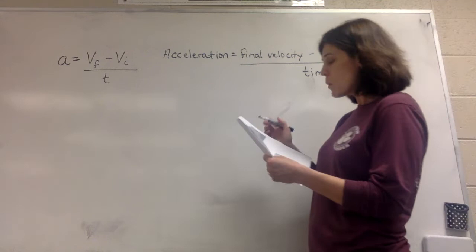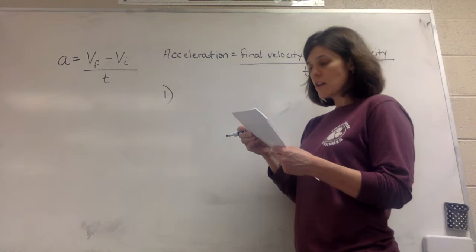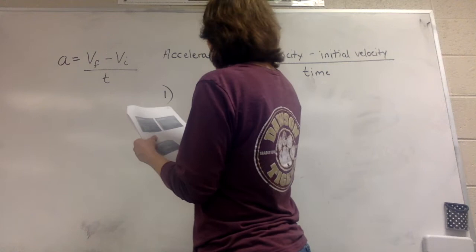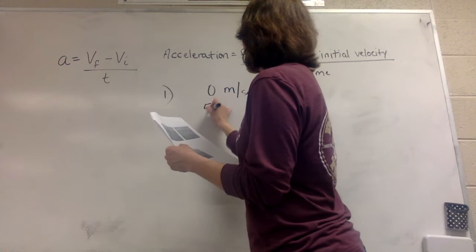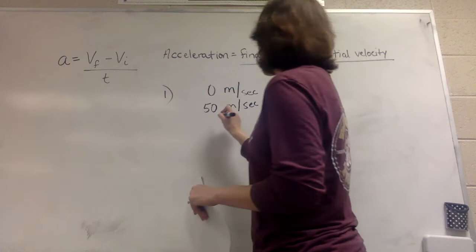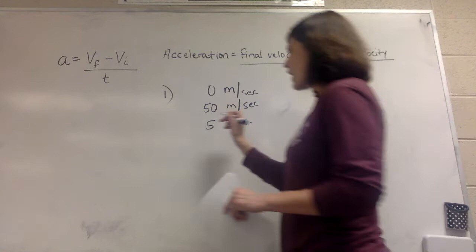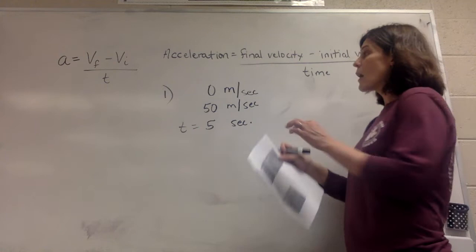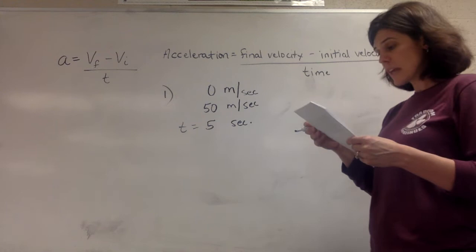As always, with any problem, let's write down what you're given and what we're trying to solve. It tells us that one velocity is zero meters per second and it's changing to 50 meters per second, and it takes five seconds for this change to occur. So five seconds would be T — that's your time value — because we measure time in seconds. We have two velocities: zero meters per second and 50 meters per second, and both of these have a direction that says 'along the north straightaway,' so there's our direction.